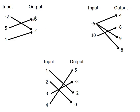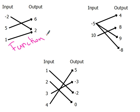We'll do the first example together and then you can try the next two. You need to check that every input has only one output. For this one: negative two has one output, five has one output, one has one output — so this is a function. For the next one, negative five goes to four, nine, and negative eight — that's more than one output, so this is not a function.